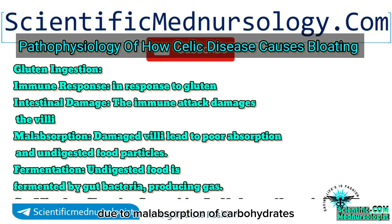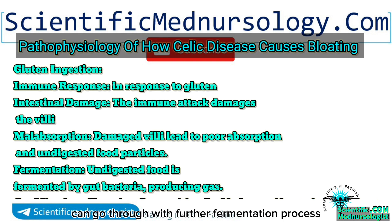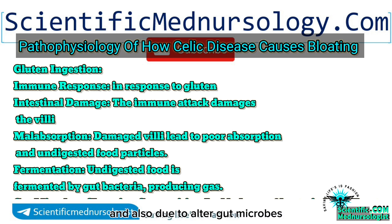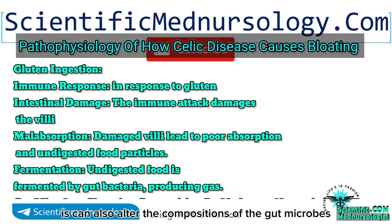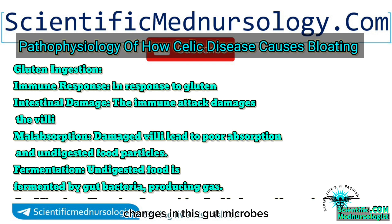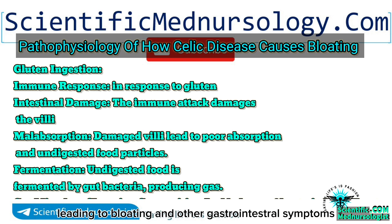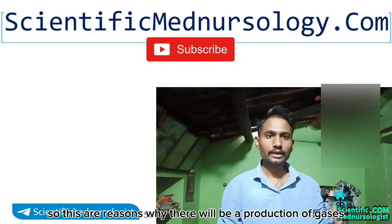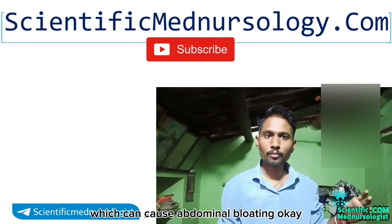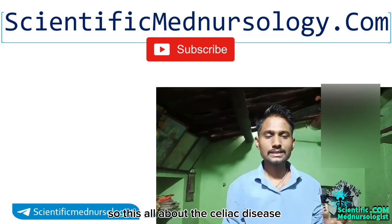Due to malabsorption of carbohydrates, these undigested carbohydrates undergo further fermentation, leading to increased gas production, which causes abdominal bloating. Celiac disease can also alter the composition of gut microbes — the community of microorganisms living in the digestive tract. Changes in gut microbes can affect digestion and fermentation, potentially leading to bloating and other gastrointestinal symptoms.